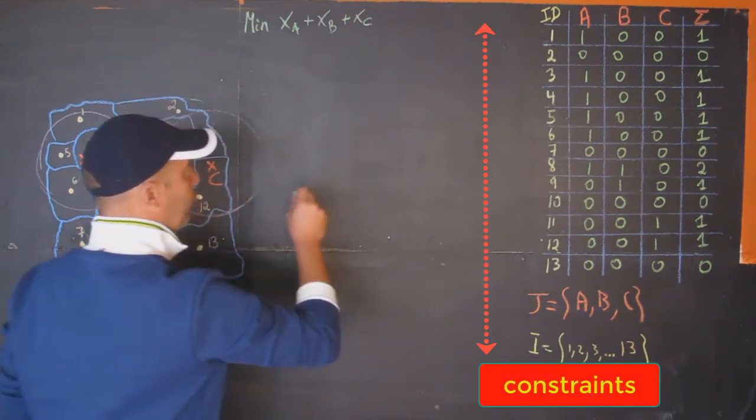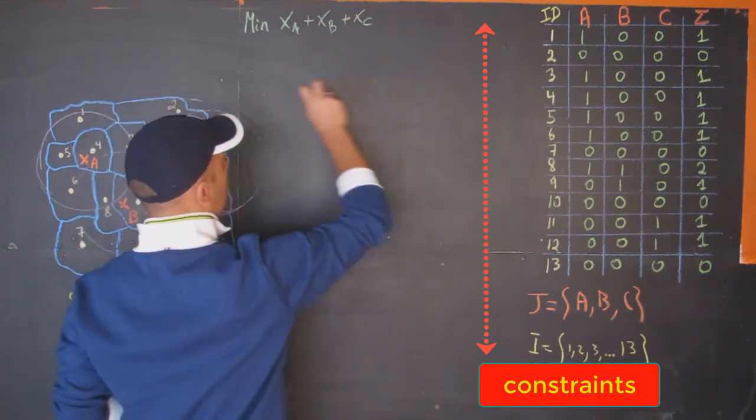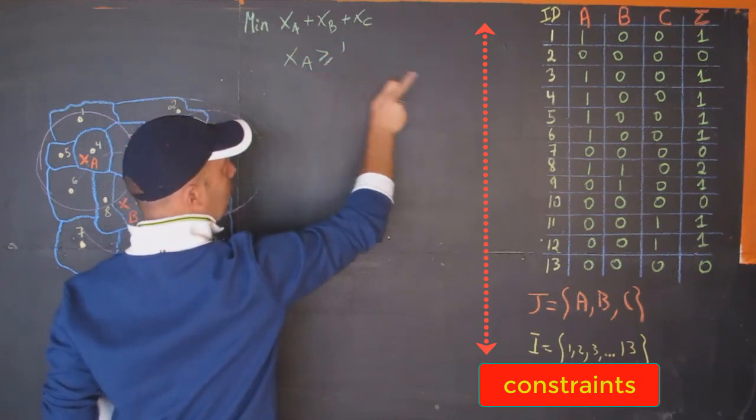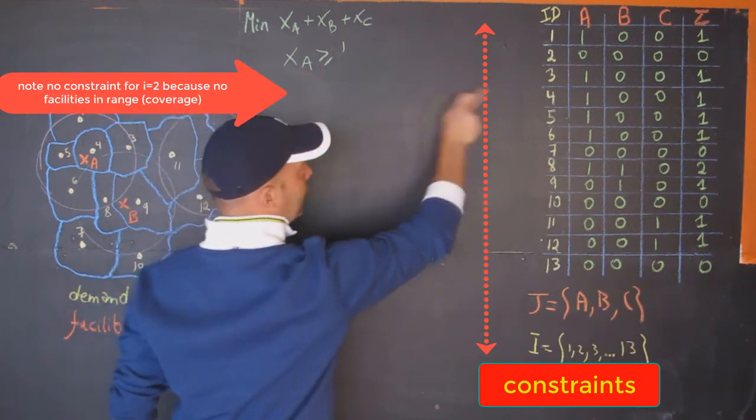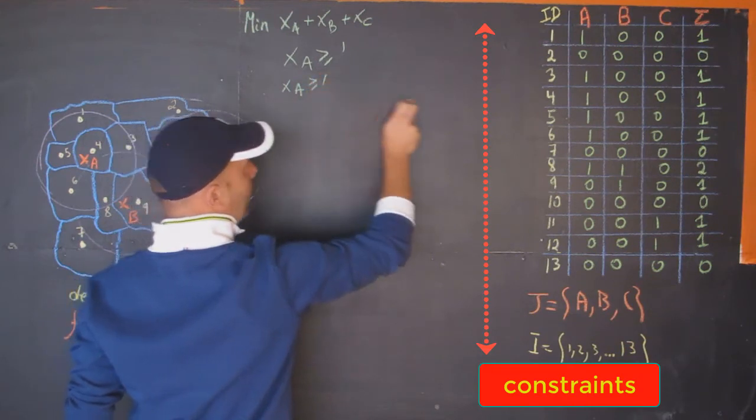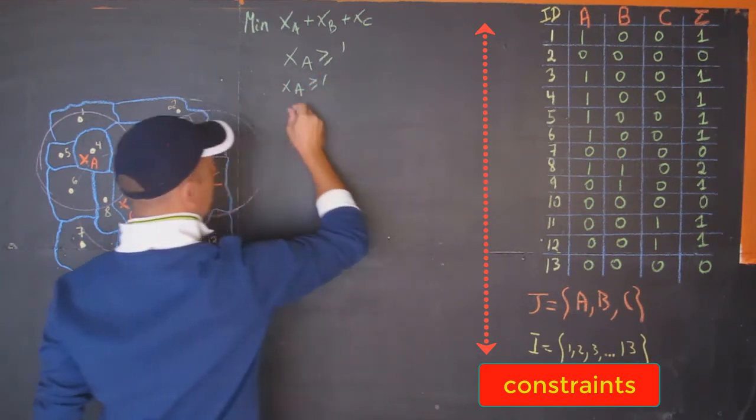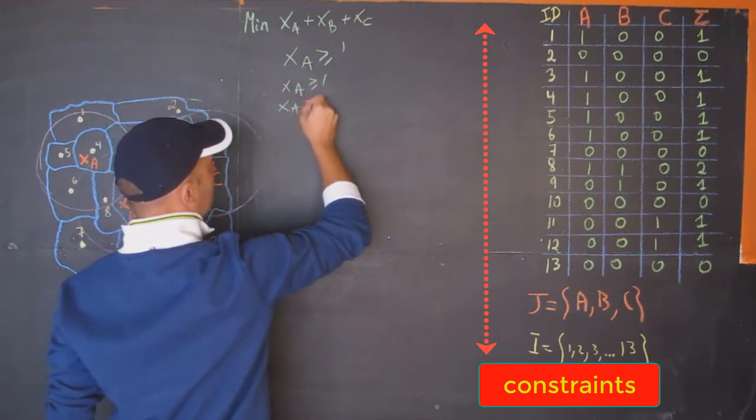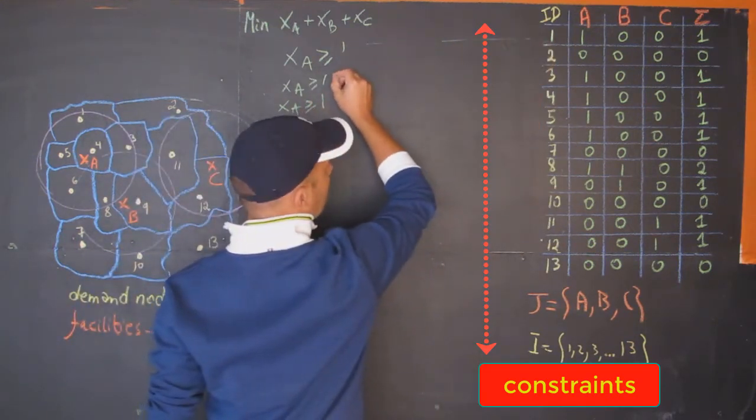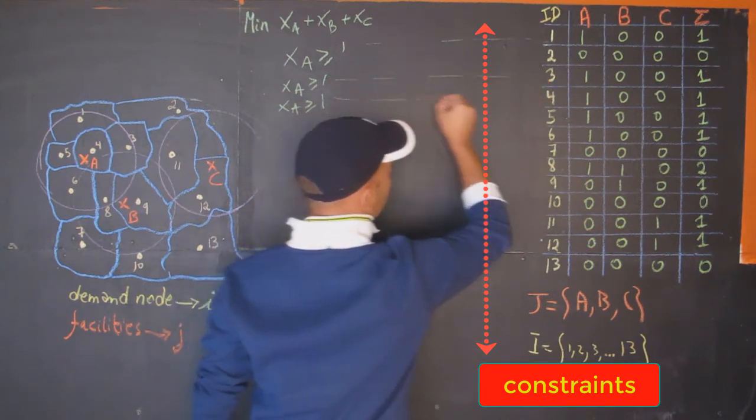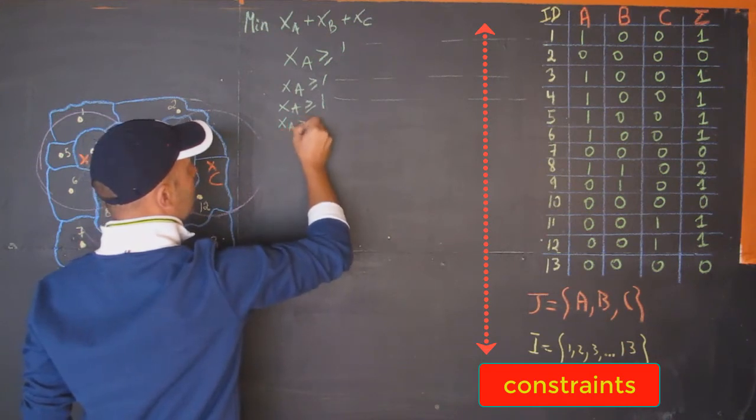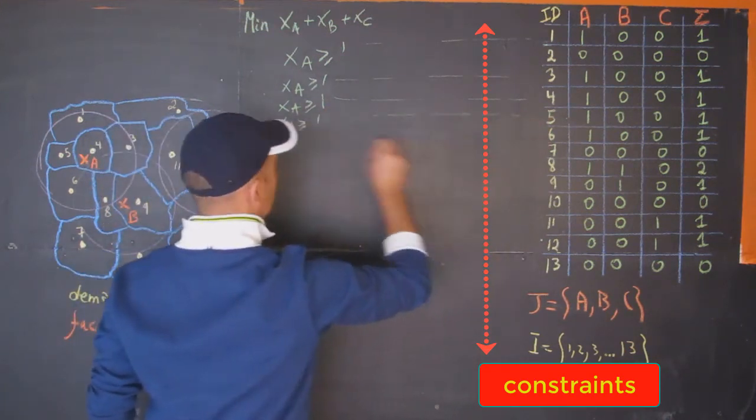The first one would be x_A greater than or equal to one. For the second one, nothing, so I'm not writing anything. For the third one, x_A should be greater than or equal to one. For the fourth one, the same thing. For the fifth one, the same thing. For the sixth one, the same thing.